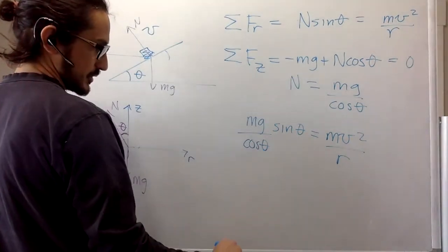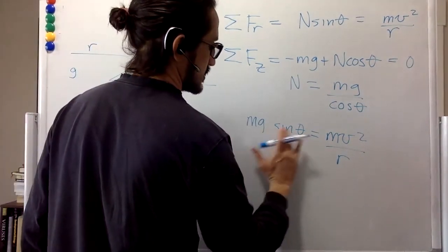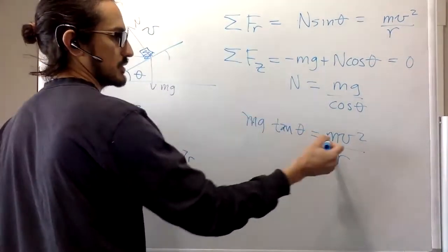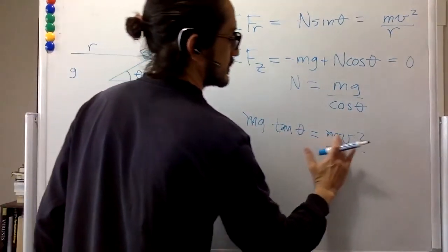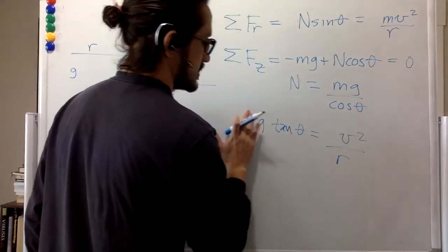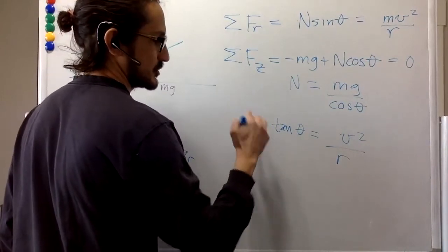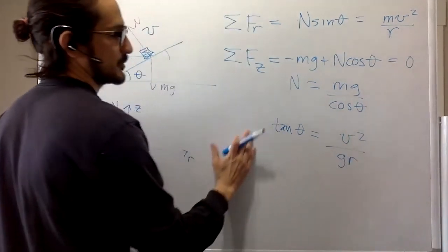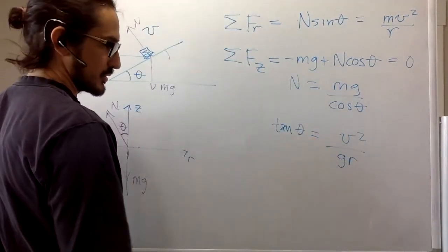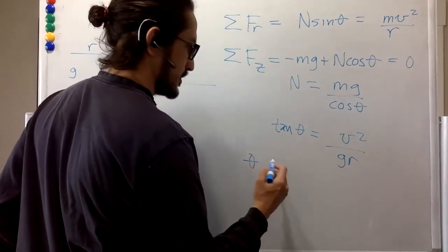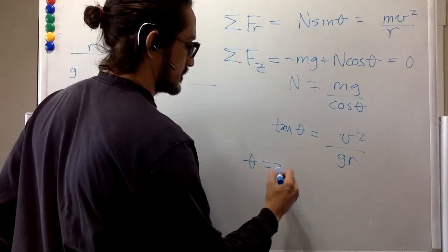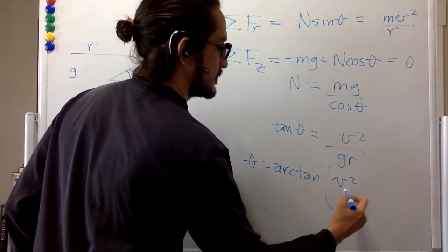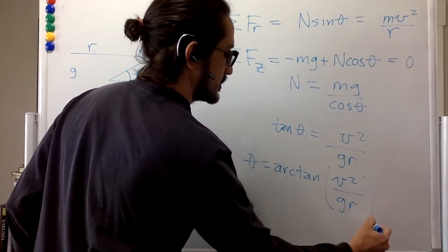Sine divided by cosine, that's tangent. And we can get rid of the masses on both sides of the equation. And we can put this g over here. And so we have the tangent of theta is equal to this. So the angle is the arc tangent of v squared over gr.